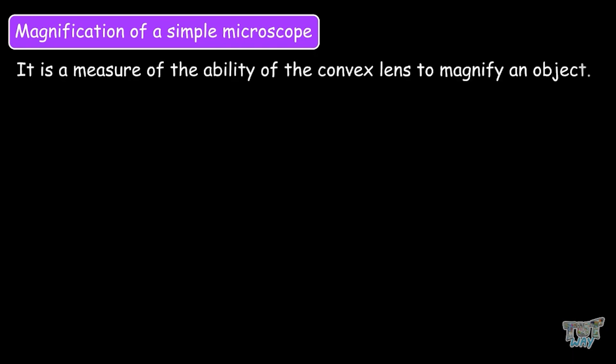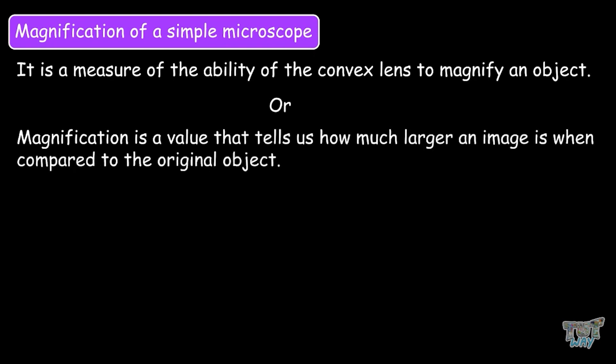Now let's learn what is magnification of a simple microscope. Magnification is to measure the ability of the convex lens to magnify an object, or we can say that magnification is the value that tells us how much larger an image is when compared to the original object.